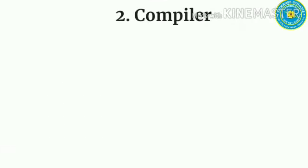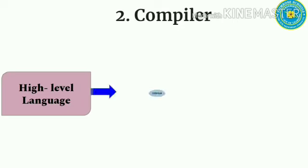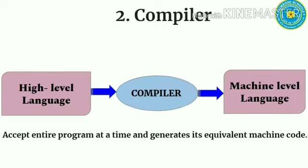Compiler - A compiler is a software that converts a program written in a high-level language into a machine-level language. It accepts the entire program at a time and then generates its equivalent machine code. Every high-level language has its own specific compiler for coding it into a machine-level language.